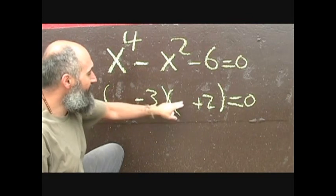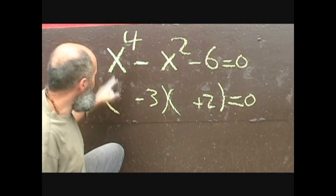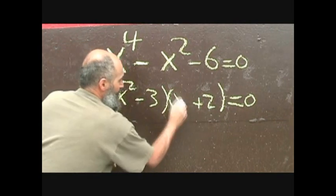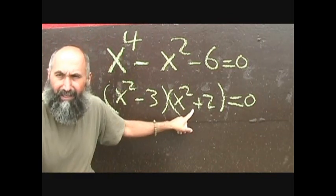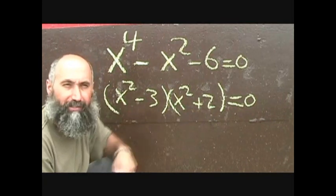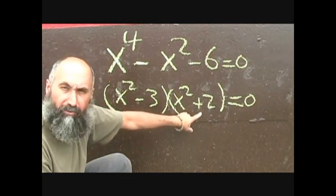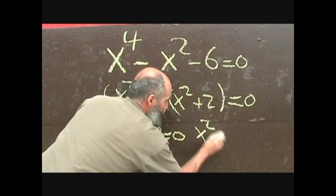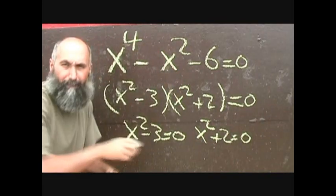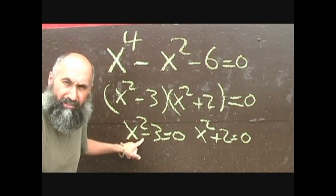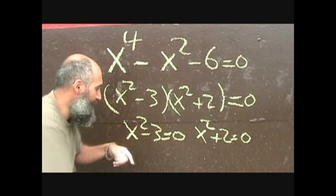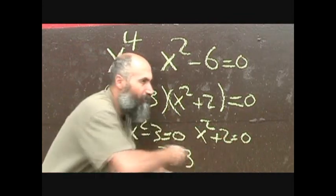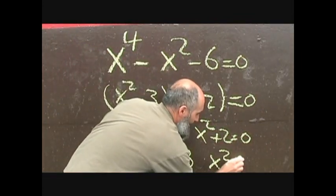What goes into the brackets here is the square root of whatever the leading term is — so for x to the power of 4, the square root is x squared. You've got two things multiplied to get zero, so you set each one equal to zero. This gives x squared minus 3 equals 0, and x squared plus 2 equals 0. Solving: x squared equals positive 3 on one side, and x squared equals negative 2 on the other.